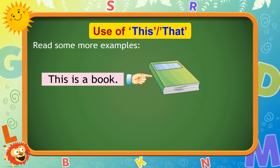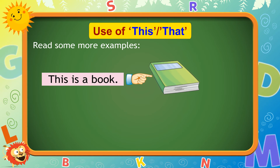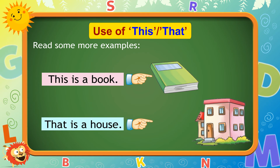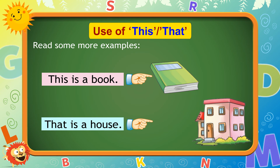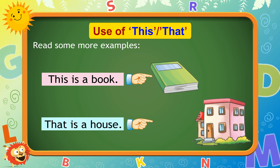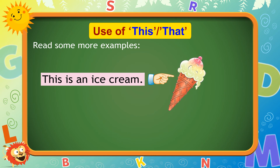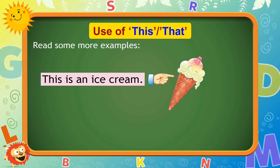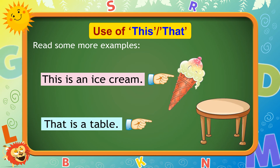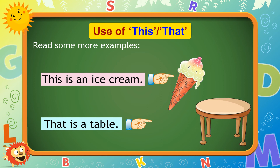This is a book. That is a house. This is an ice cream. That is a table.